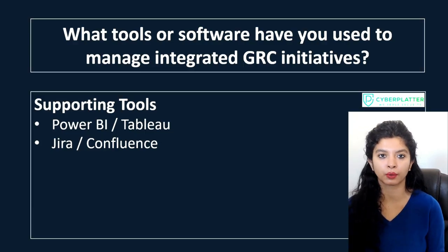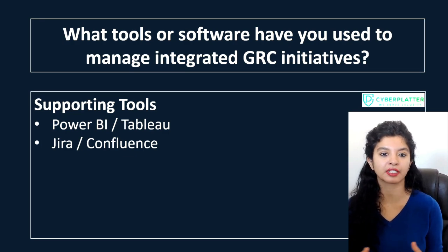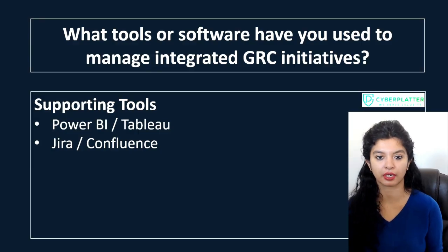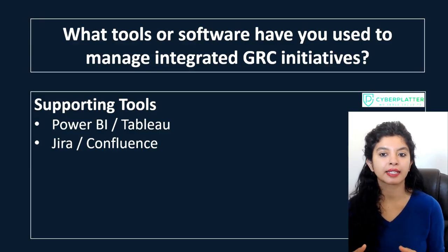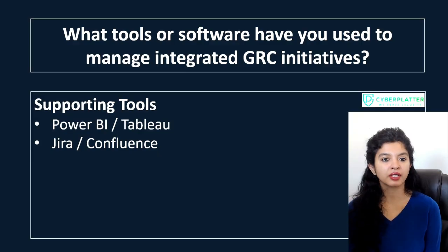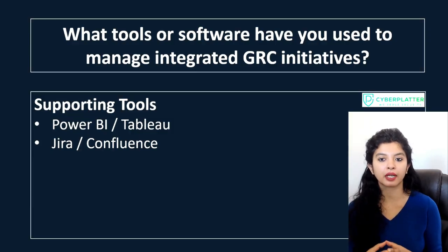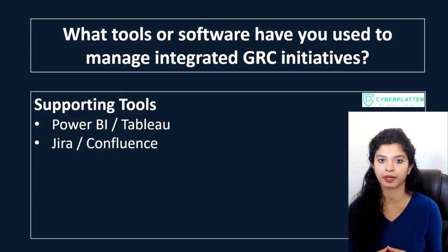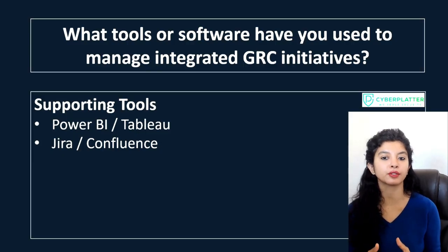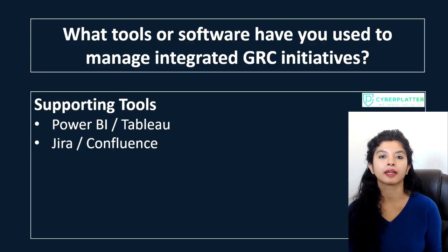You don't have to list all of these tools — this is only for your understanding. Instead, you could answer by saying that in your experience you have worked with tools like RSA Archer and ServiceNow GRC to manage integrated GRC initiatives. These platforms helped centralize risk registers, automate compliance workflows, and generate real-time dashboards for leadership. Additionally, you used Power BI to integrate data from these tools for executive reporting. What is most valuable is how these solutions break down silos and give a single view of risk and compliance. You can adapt quickly to new systems since most follow similar principles of risk registers, compliance workflows, and reporting dashboards.